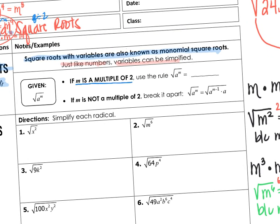Here's the rule: if m is a multiple of two, the square root of a to the m equals a to the m divided by 2 — you simply take the exponent and cut it in half. You can always test it. For example, the square root of x to the tenth power should be x to the fifth power. Is x to the fifth times x to the fifth equal to x to the tenth? Keep the base, add the exponents — yes. So the square root of x to the tenth equals x to the fifth, and x to the fifth times x to the fifth equals x to the tenth.